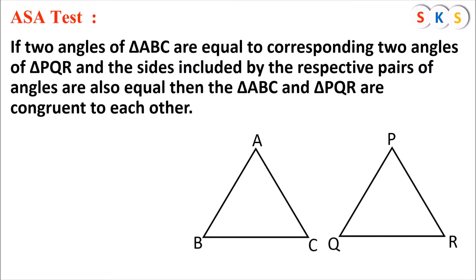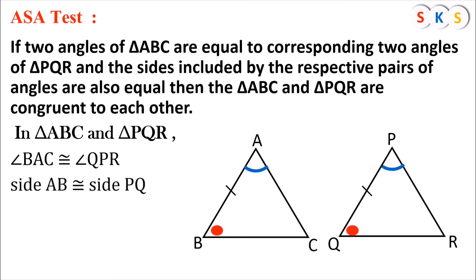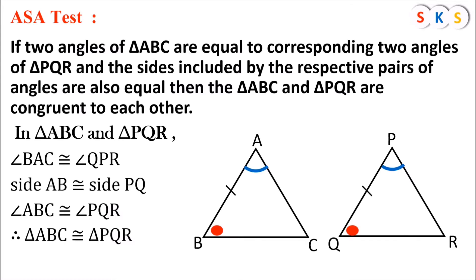Here we have triangle ABC and triangle PQR. In triangle ABC and triangle PQR, look at this figure. Angle A is congruent to angle P, that is angle BAC congruent to angle QPR. Side AB is congruent to side PQ. Angle ABC is congruent to angle PQR. Therefore, triangle ABC is congruent to triangle PQR.